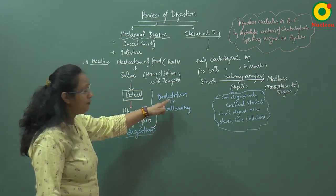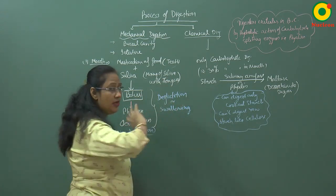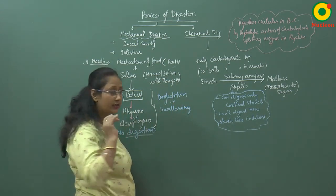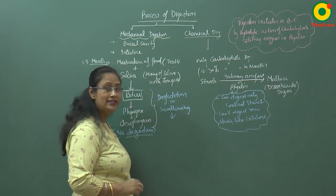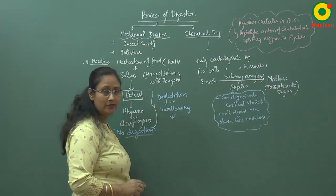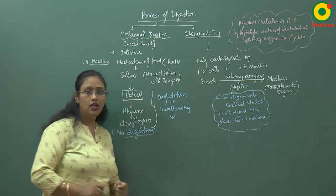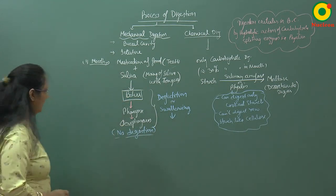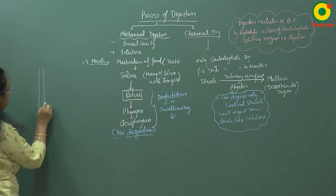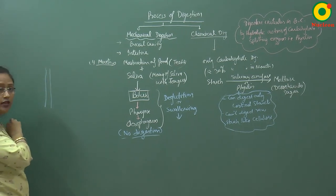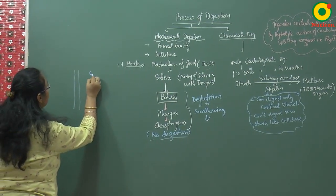The food moves through the esophagus with the help of the process of deglutition, aided by peristalsis — peristaltic movement — which is the rhythmic contraction and expansion of the wall of the alimentary canal. In the wall of the alimentary canal there is contraction and expansion happening alternately.